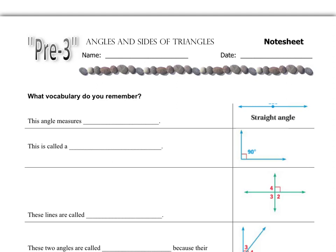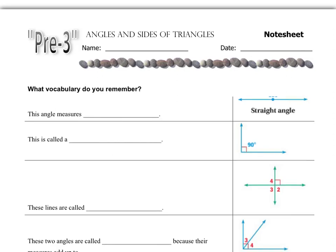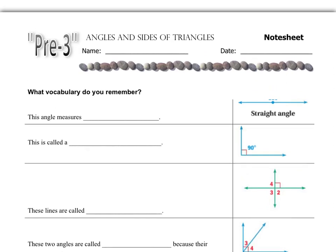A straight angle kind of looks like a line. But really, if you measured the angle around that vertex point in the middle, we should have how many degrees? Well, this angle measures 180 degrees. It's halfway around a circle, so the straight angle is 180 degrees.